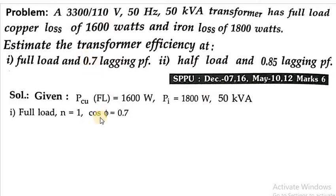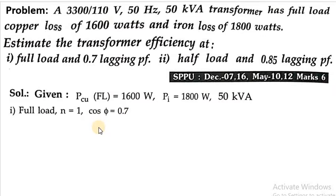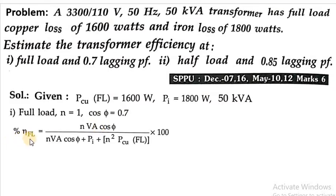Now using this data, we can calculate the efficiency at full load condition. The formula is: percentage efficiency equals (n × VA × cos φ) divided by (n × VA × cos φ + P_i + n² × P_cu(FL)) times 100.